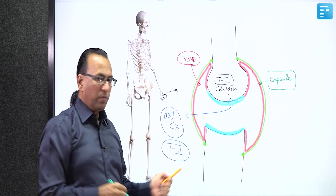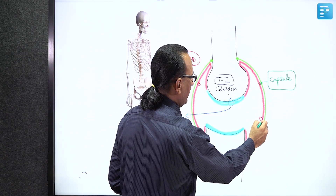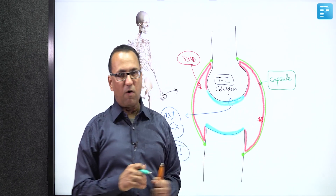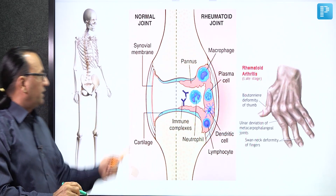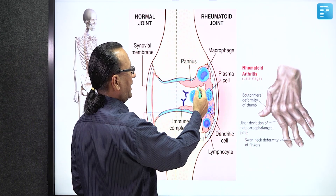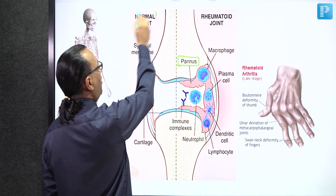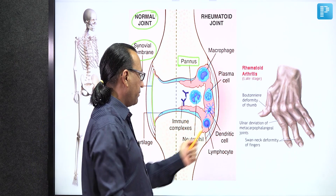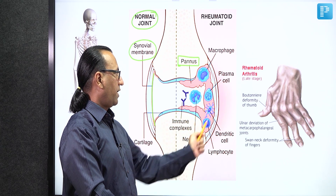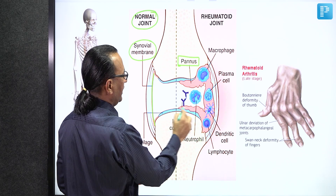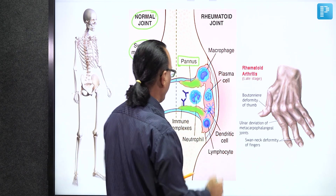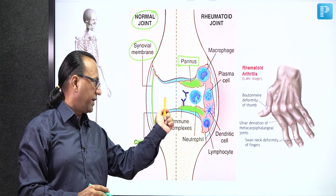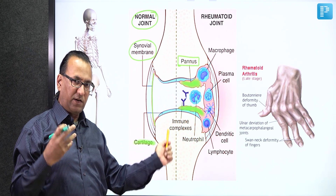In rheumatoid arthritis, there is progressive involvement of the synovial membrane - it undergoes proliferation, increased vascularity, secretes more synovial fluid, and forms what is called pannus. In the next diagram, the metacarpophalangeal or proximal interphalangeal joint shows pannus formation with hypertrophy of the synovial membrane, granulation tissue, and dense inflammatory cells. As it thickens, it produces more fluid and later involves the articular cartilage and bone, leading to fibrous or bony ankylosis with decreasing joint space.